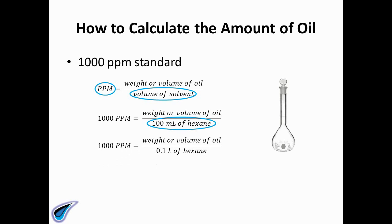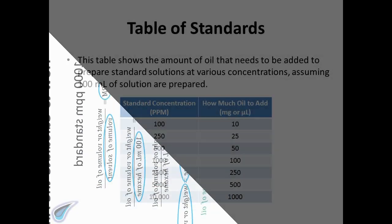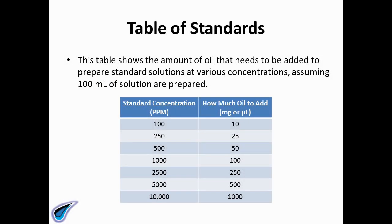Once you have all the knowns in the equation and the correct units, move all of the knowns to one side of the equation and the unknown to the other. Solve for the unknown and this will be the amount of oil that you need to add to make your standard solution. This table shows the amount of oil that needs to be added to prepare standard solutions at various concentrations, assuming 100 milliliters of solution are prepared.